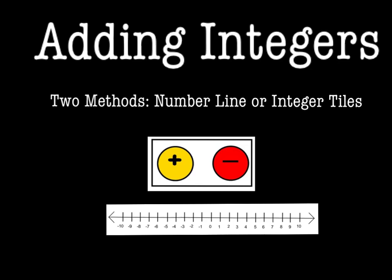Hey guys, in today's video we're going to take a look at two methods for adding integers. The first method that we'll look at will be using integer tiles or integer chips, and the second method will be using a number line. And then at the end we'll look at the patterns we see to see if we can have some shortcuts.